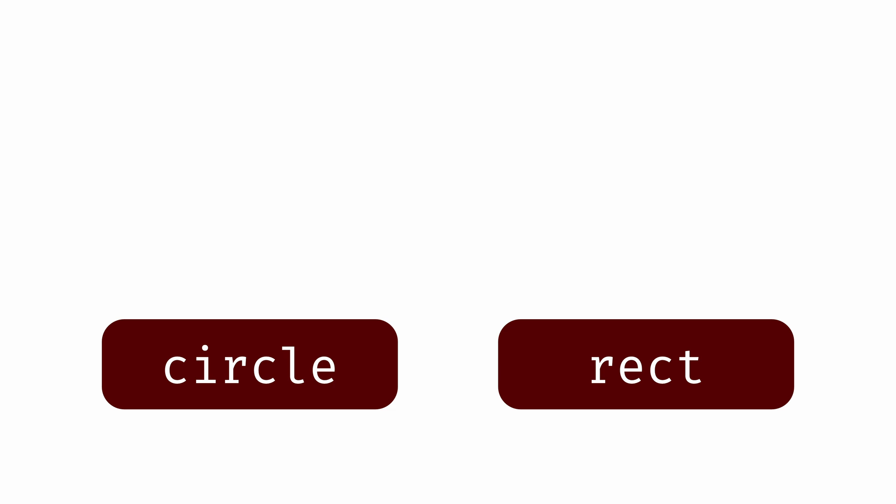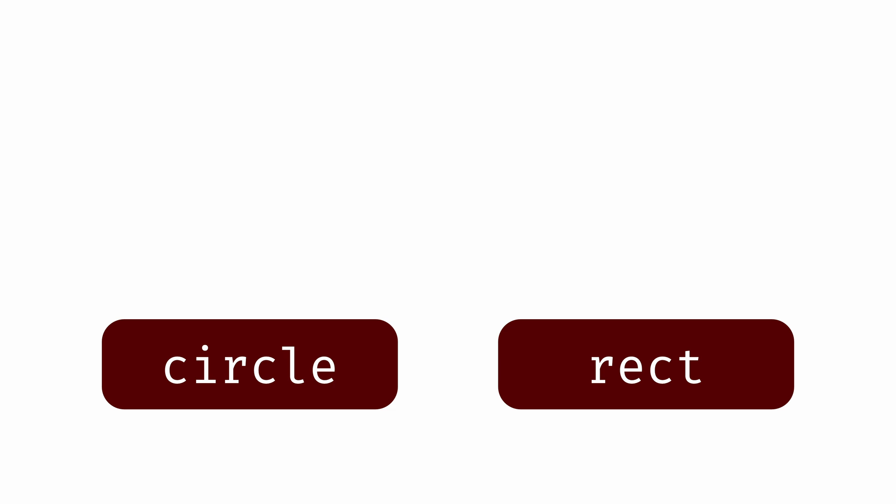Inheritance allows one class to inherit behavior from another class, so that the same behavior can be shared between classes without needing to repeat code. Right now, both circles and rectangles are separate classes that implement all of their own functionality. Instead, what we can do is define a more general class called shape, which will implement the behavior that's common to both circles and rectangles — getting and setting positions and colors. And then the circle and rectangle classes will inherit from the shape class, so that they don't each need to separately implement the same behavior.